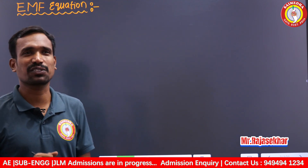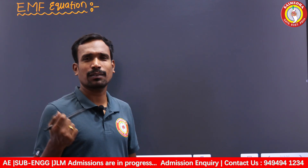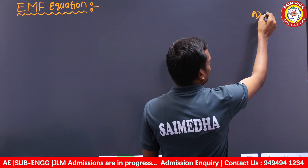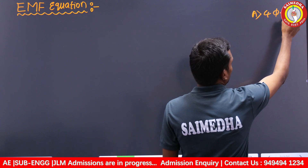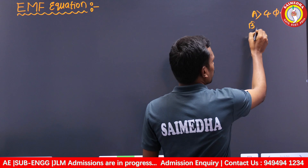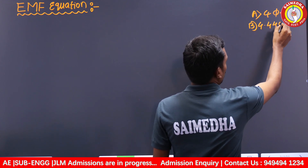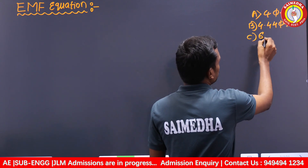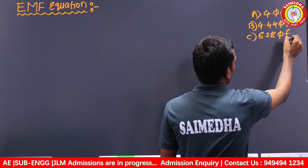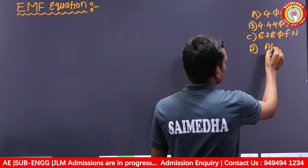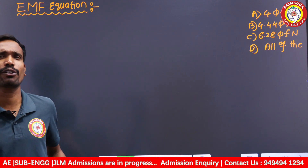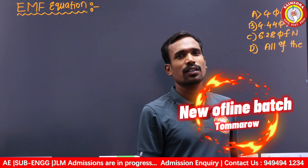Hi everyone, in this video we are going to discuss the EMF equation of a transformer. I will give you four options: Option A: 4 × Φ × f × N, Option B: 4.445 × f × N, Option C: 6.28 × π × f × N, Option D: all of the above. Can you tell me which of the following is the correct EMF equation of a transformer?